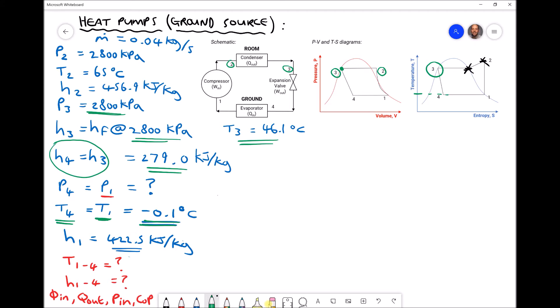The other quick win that we have here is we know that the enthalpy at position 4 is the same as the enthalpy at position 3 because that throttling process was constant enthalpy. Therefore, H4 also equals 279.0.